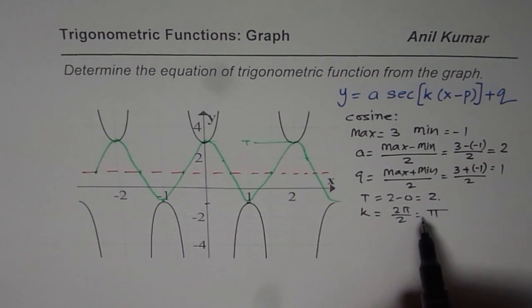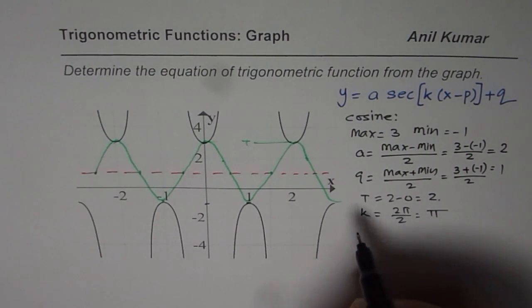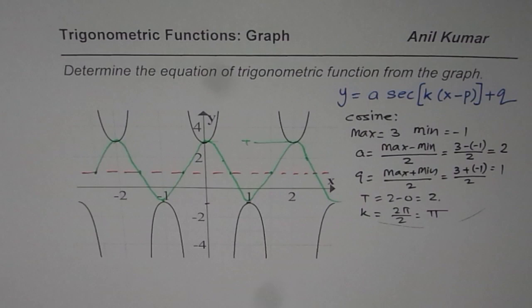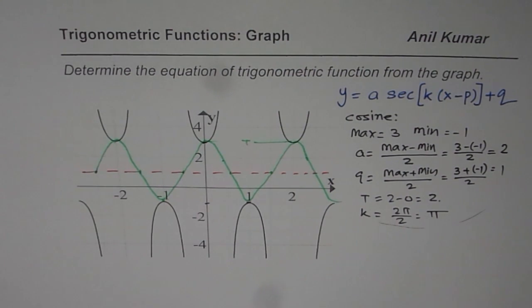So we get the cosine function here. So using these values actually we can now write down our secant function. So basically we analyze the cosine function to get the equation of the secant function.